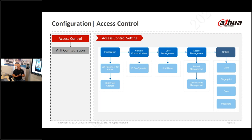A quick access control cheat sheet: set the admin password, set the email address, configure network communication across three LAN cards, and manage users. The solution supports thousands of users. DSS Express lets you configure multiple users simultaneously, set access rights based on time, and configure different unlock methods for entering the building.